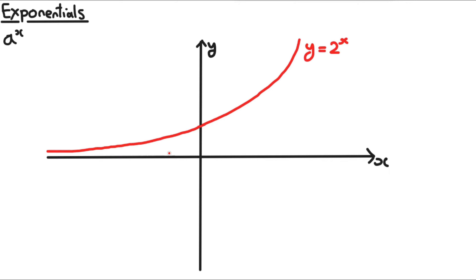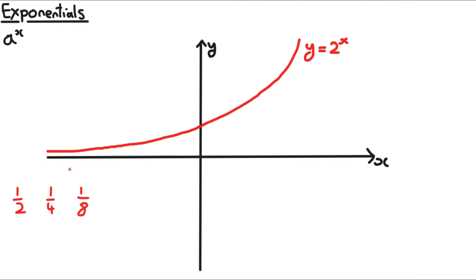When x is negative, remember how negative powers work. It goes 2 to the power of minus 1, which is a half; 2 to the power of minus 2, which is a quarter; and 2 to the power of minus 3, which is 1 over 8. It gets smaller and smaller and has an asymptote at y equals 0. No matter how negative x gets, it will never actually equal 0.